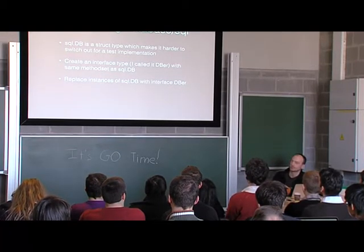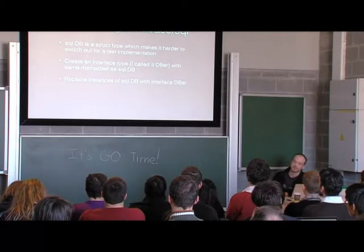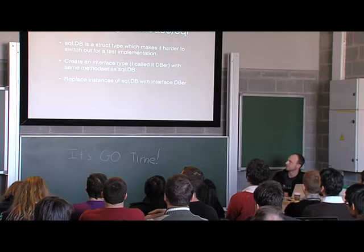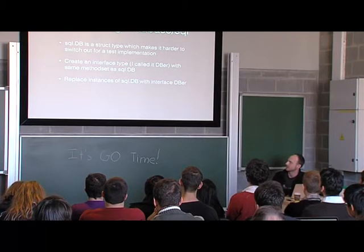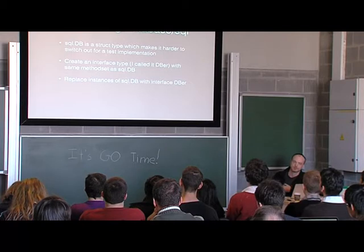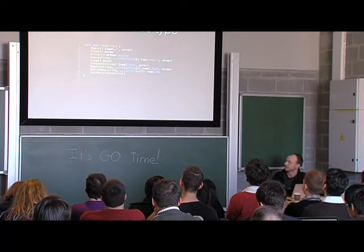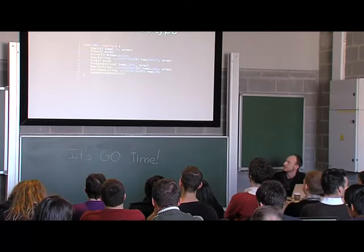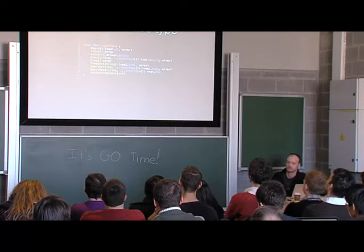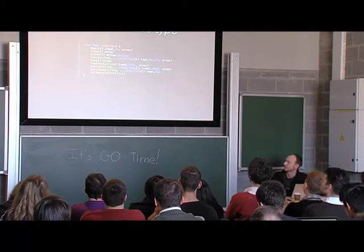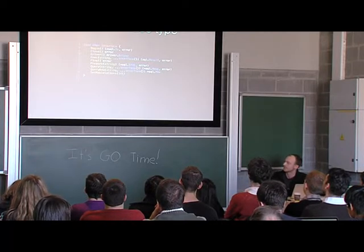I made an interface type — I called it DBO, which is a terrible name, don't call it that. It has the same method set as the struct type. By virtue of having the same method set, sql.DB implements that interface. In some places in our code where we pass in a database dependency, I just replace the instances with this interface. It's a big interface — most interfaces in the standard library have one or two, maybe three methods, but this obviously has quite a few. These are just the method signatures that the DB type has as a receiver.